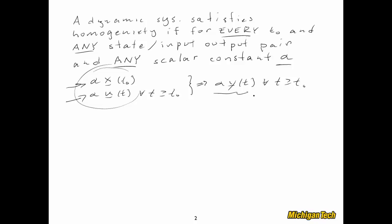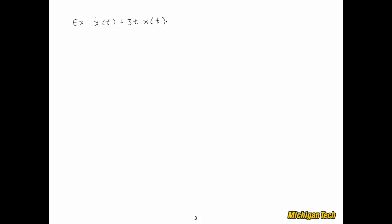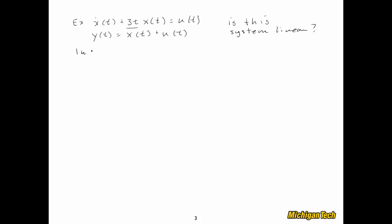Now let's look at an example. It's a first-order differential equation and it's time-varying. We have a coefficient of 3t in front of the x(t) term. The output y(t) equals the state x plus u(t), where u(t) could be any function of time — sine t, t cubed, etc. We'll get a general solution for y(t) using an integrating factor, then explore homogeneity and additivity.